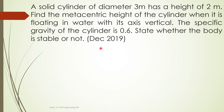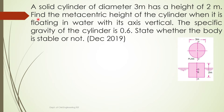A solid cylinder of diameter 3 meters has a height of 2 meters. Find the metacentric height of the cylinder when it is floating in water with its vertical axis. The specific gravity of the cylinder is 0.6. State whether the body is stable or not. The height is 2 meters and the diameter is 3 meters — diameter is shown in the plan and height is shown in the elevation.